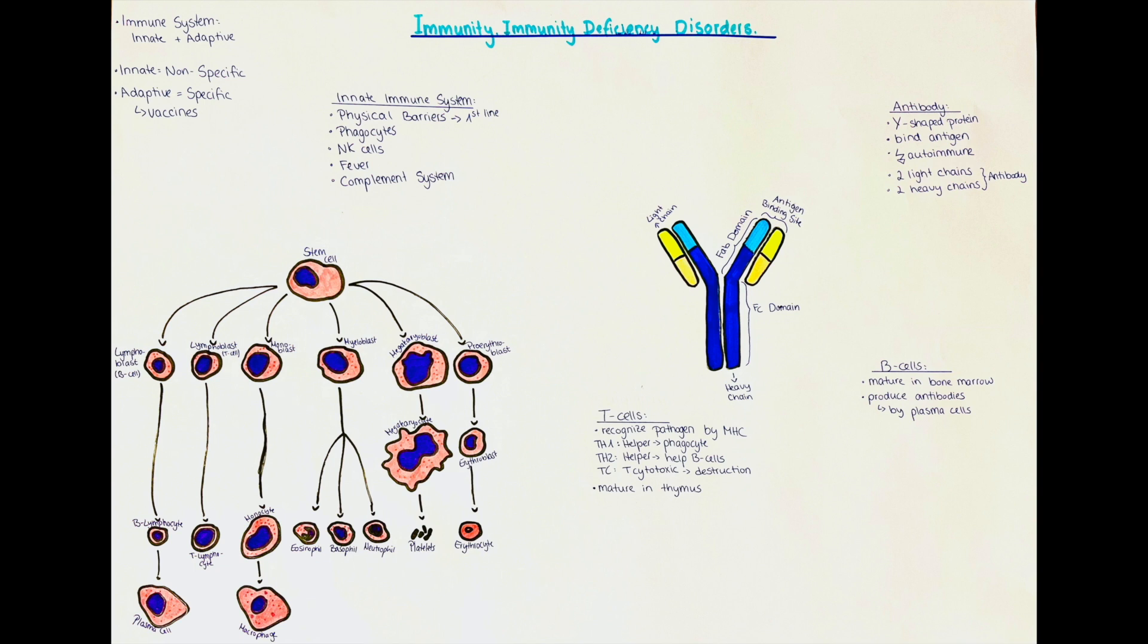One light chain is then paired with one heavy chain to form two halves of the respective antibody. There's also two sites, one on each half, where the antibody attaches to the antigen.